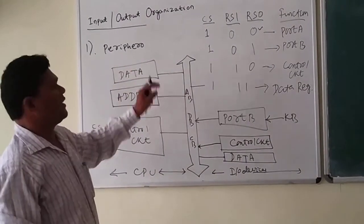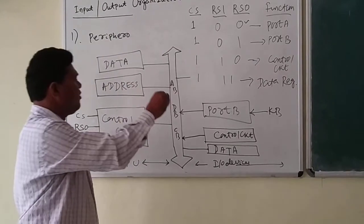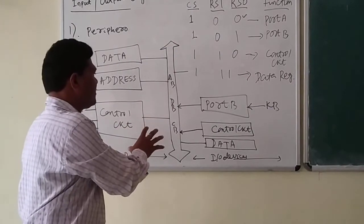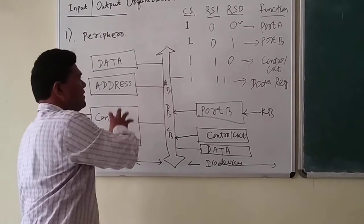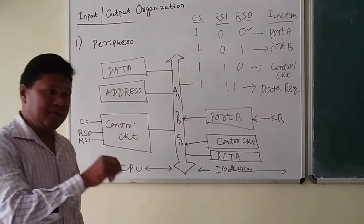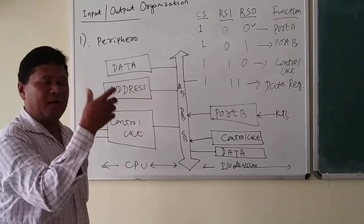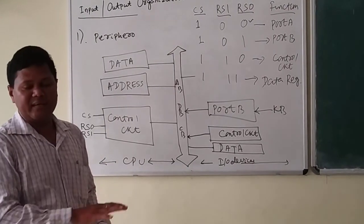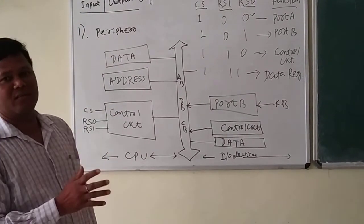In this I/O organization, the CPU cannot be directly connected to the devices. There are mediators — the I/O processor, or input-output processor — that performs all these operations to smoothly exchange information between the I/O devices and the CPU. In the next class, we will clearly examine how data is actually transmitted from the CPU to I/O devices and vice versa, and how the speed mismatch is handled using mediators.